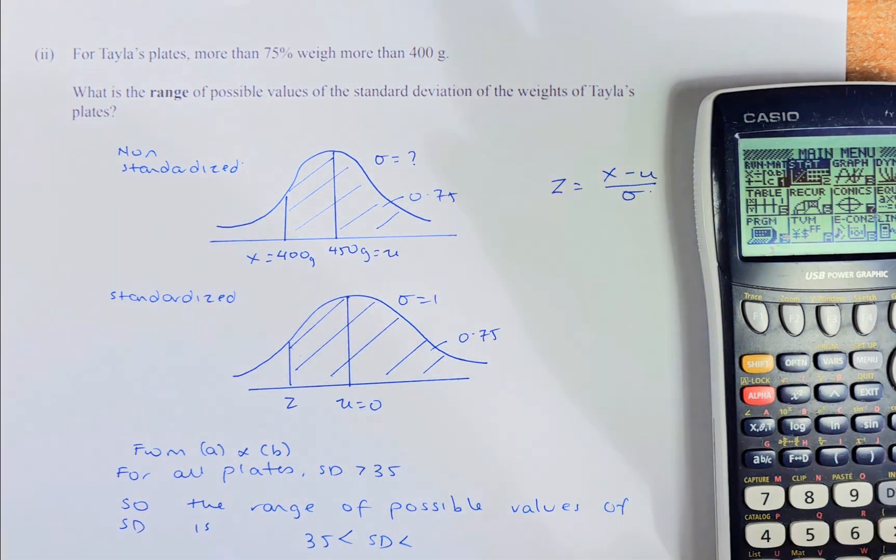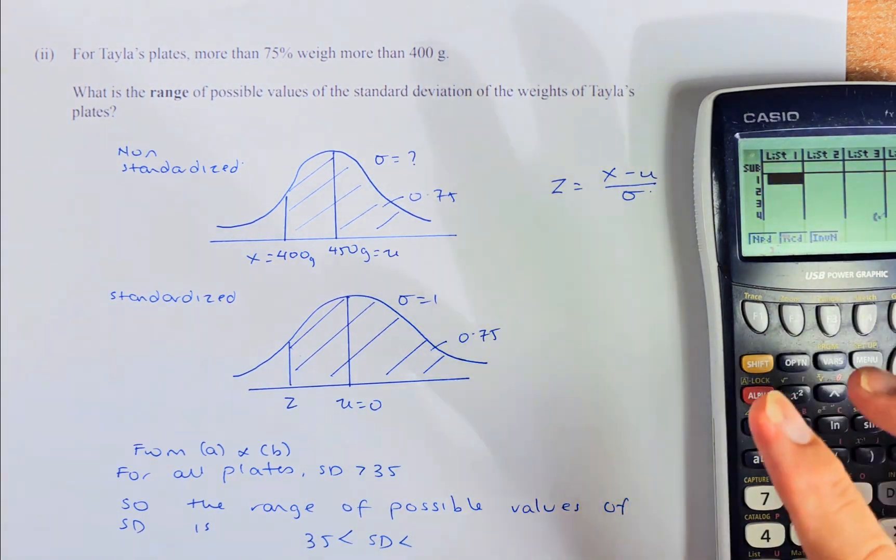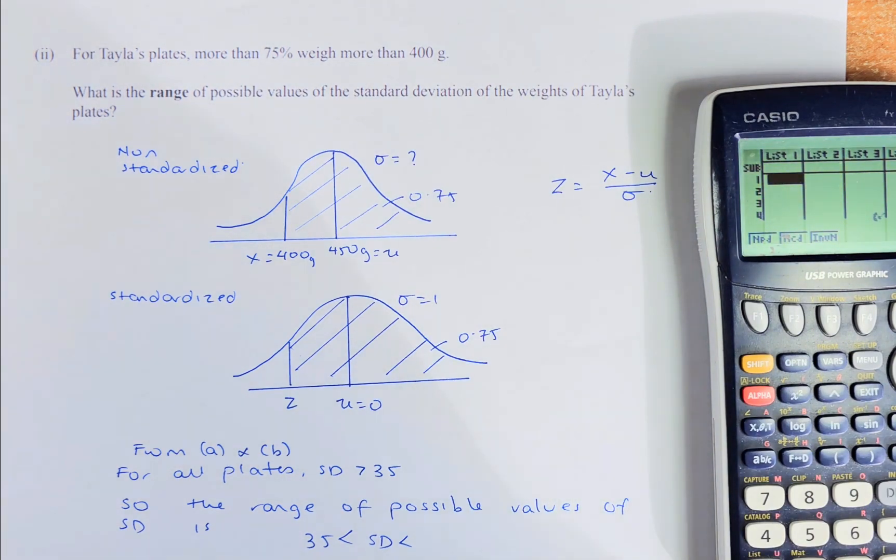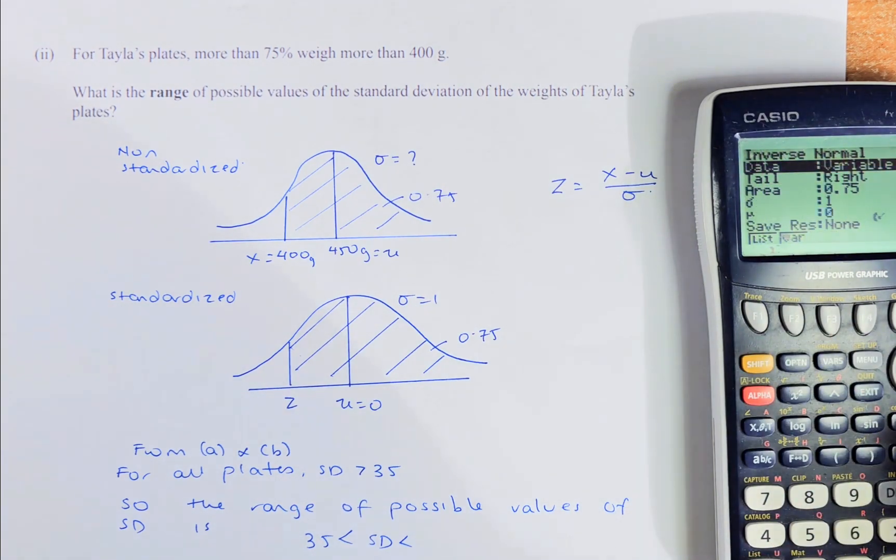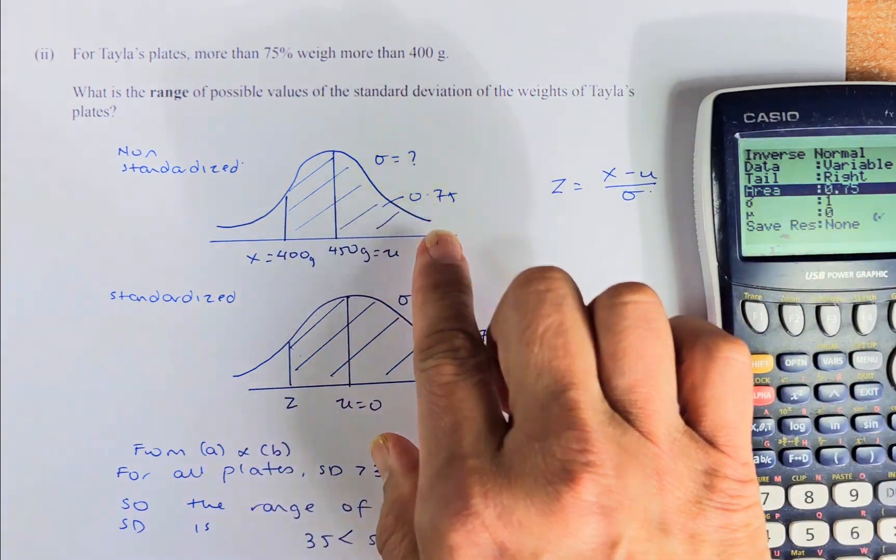We go straight to the statistics. Then we go to distribution. And normal, F1. Then this time it's inverse normal. Whenever they ask you to calculate mean or standard deviation, we have to do an inverse normal with standardized inverse normal where the mean equal to 0 and the standard deviation equal to 1. We're going to put inverse normal. Now it's on the right. So we're going to put on the right. Execute.